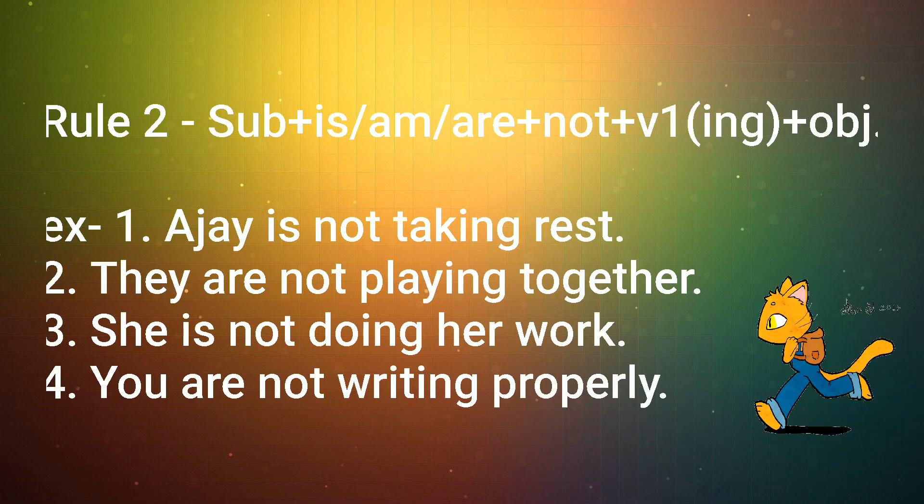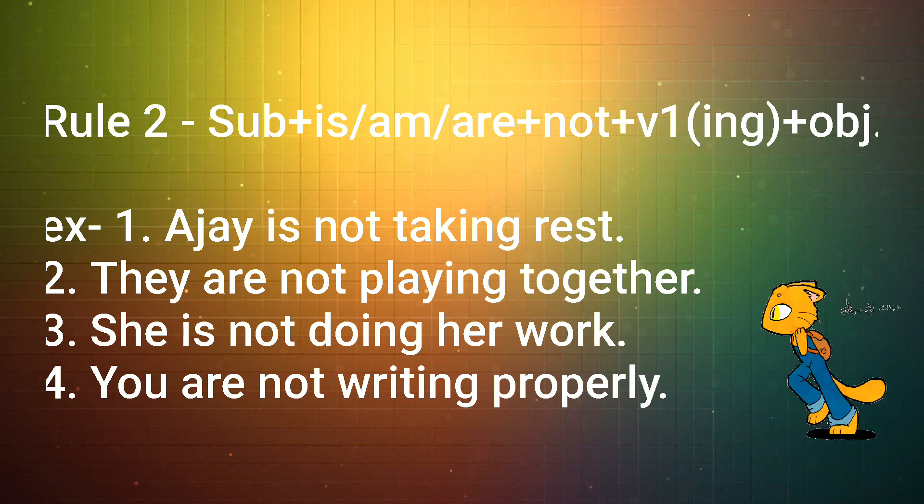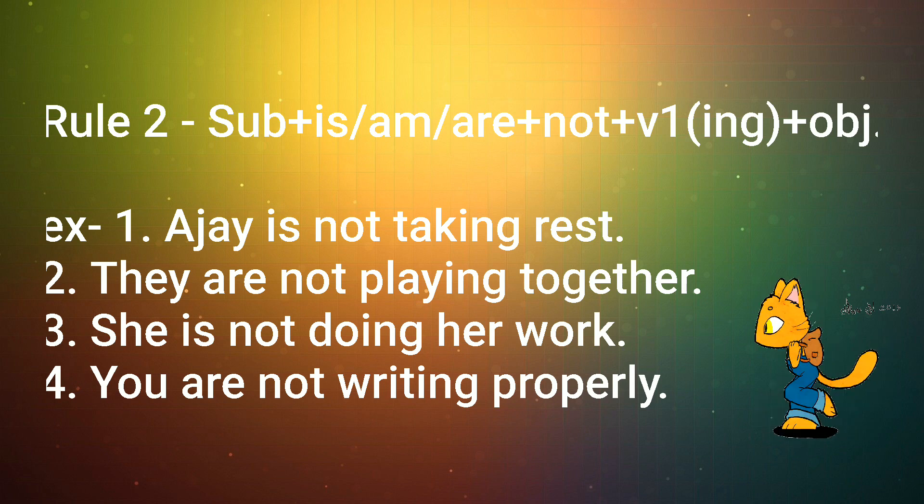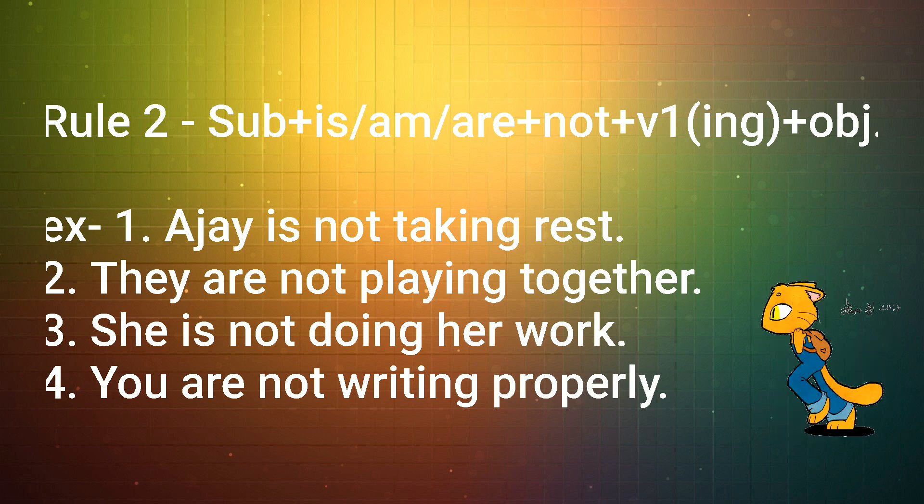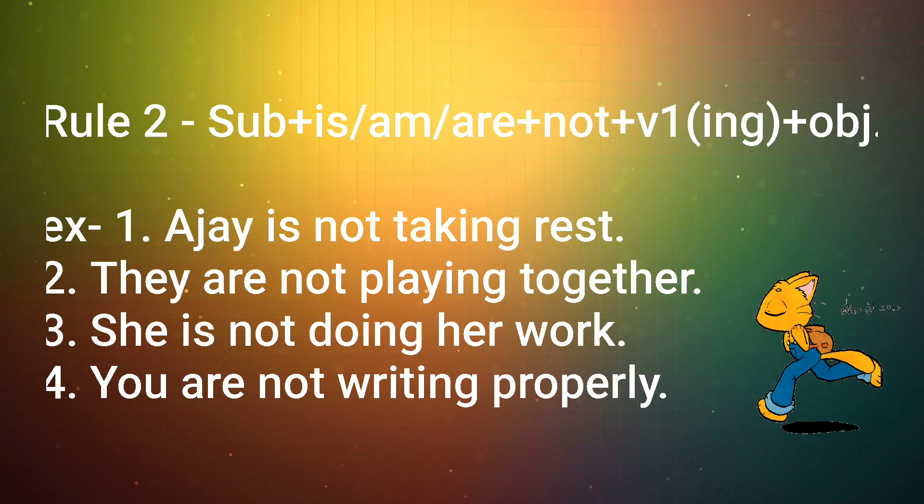Now, rule number two says: subject plus is/am/are plus not plus verb's first form along with -ing plus object. Rule number two indicates negative sentences. That is why we simply add 'not' after is/am/are. Let's see some examples. Ajay is not taking rest. They are not playing together. She is not doing her work. You are not writing properly. You can see we have simply added 'not' after is/am/are.